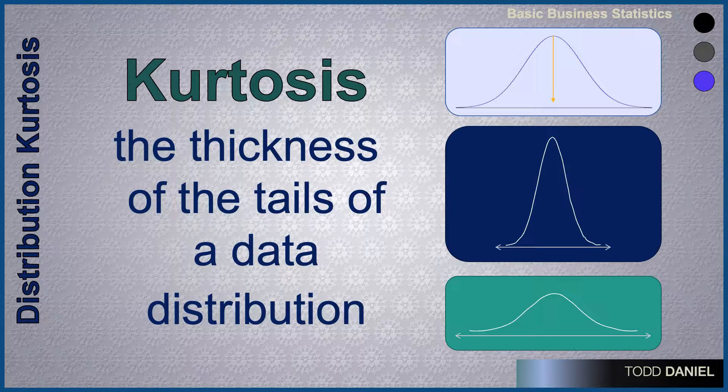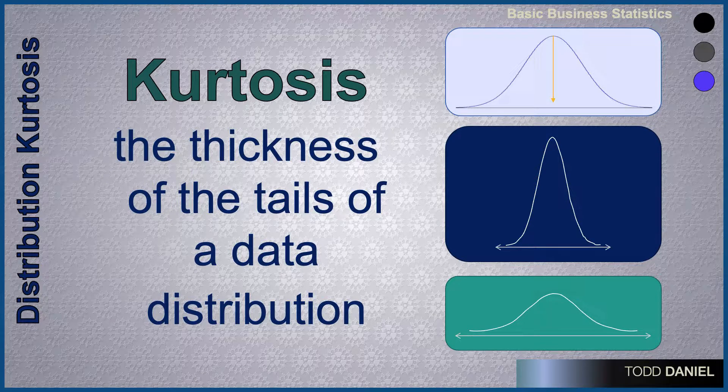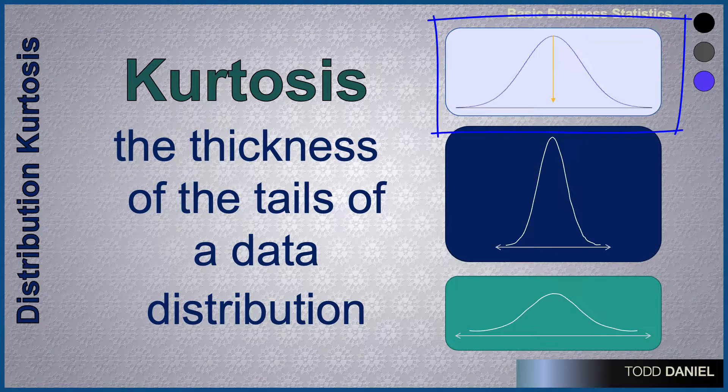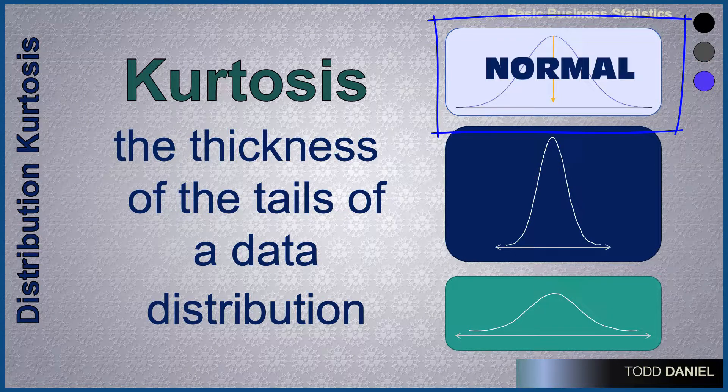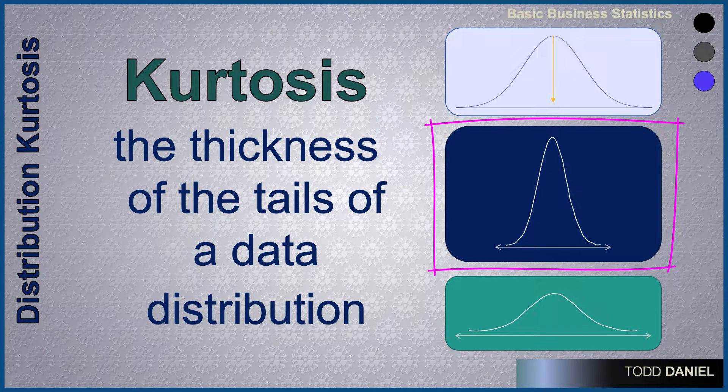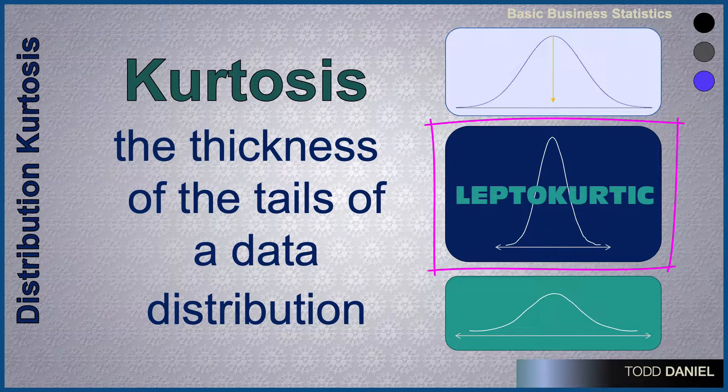Kurtosis is a measure of the thickness or heaviness of the tails of a data distribution. A normal distribution has a medium amount of kurtosis. If the tails get thinner, we call this a leptokurtic distribution. And here I'm exaggerating the thinness and the height of the curve for illustration.